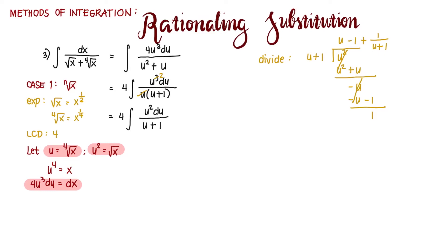So this is plus 1 over u plus 1. So we can now rewrite our given as 4 integral of the quantity u minus 1 plus 1 over u plus 1 du.